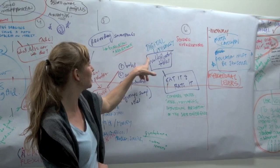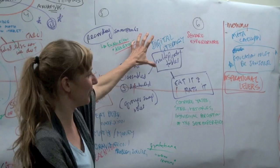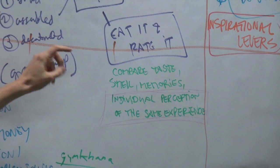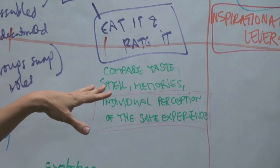They sit together, eat, and rate it. This is where the sensory experience comes back into play because they compare the taste, the smell, and memories. They realize that individual perception can be different although they have the same experience.